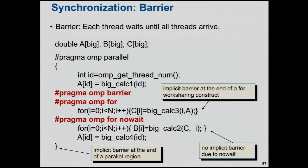The barrier is probably the most important synchronization construct to the typical OpenMP programmer. It defines a point where all the threads wait until everyone arrives before anyone moves forward. What I'm going to talk about is what a barrier does, how you would probably use it, and where it's implied — because you've been using barriers already, even though you don't know it.